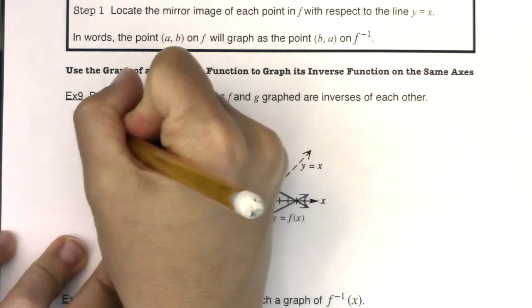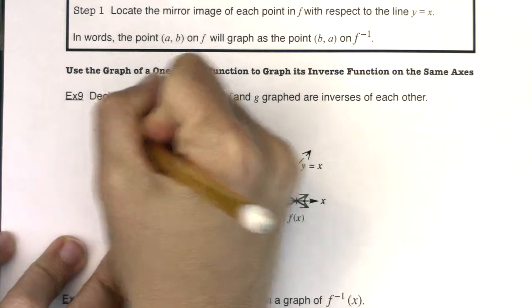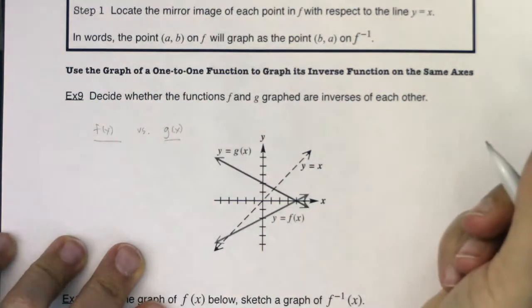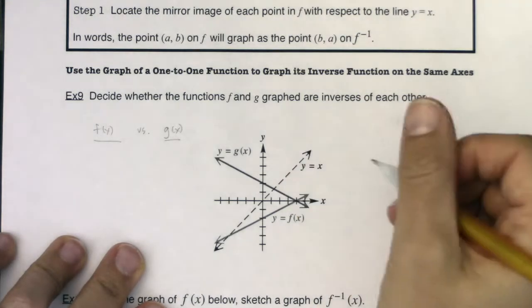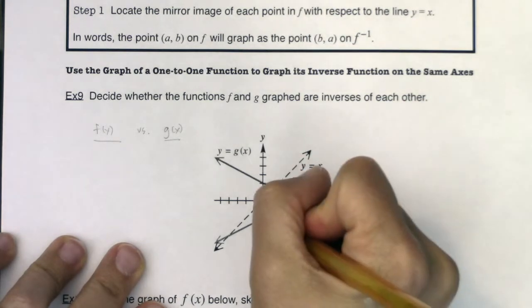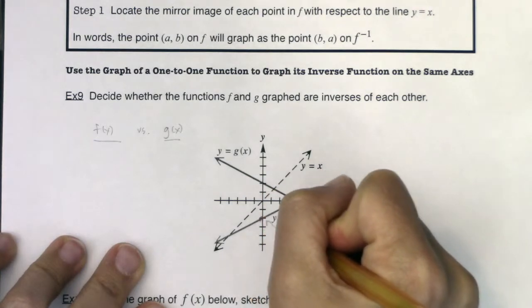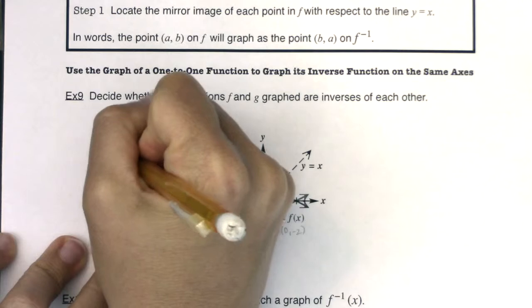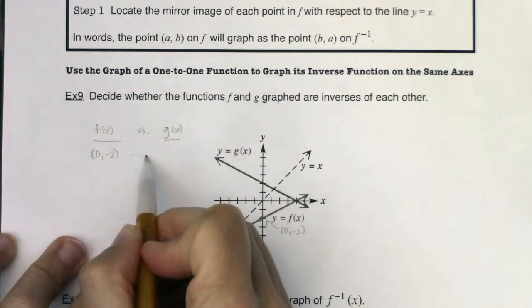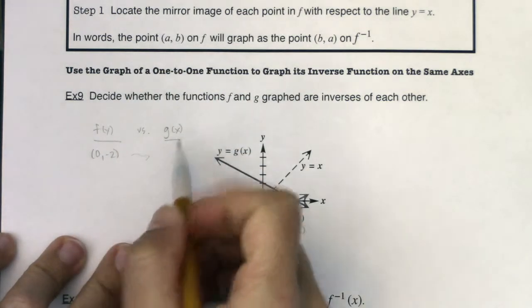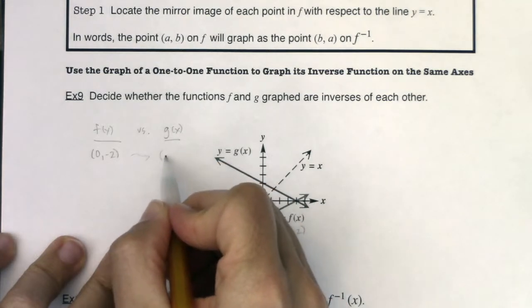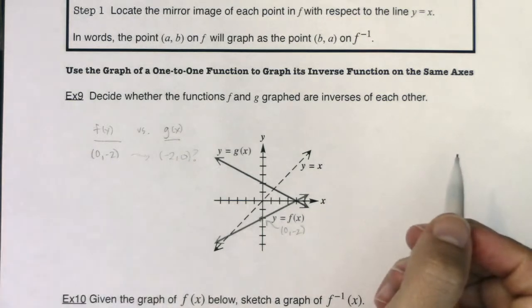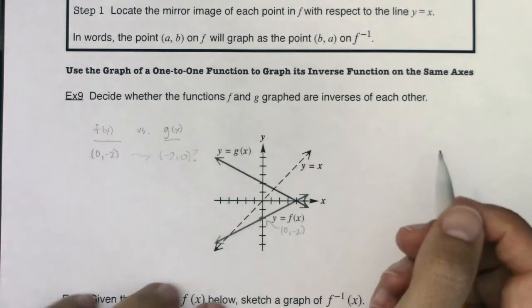Sometimes it's just good to compare ordered pairs. Let's look at f of x versus g of x numerically, okay? So find an ordered pair on either of these two functions. I'll start with f of x. I see this is a nice ordered pair. Do you see it right here at 0, negative 2, okay? Well, what would that imply about g of x if these were really inverse functions of one another? It would imply that g of x should have the ordered pair negative 2, 0. I'm going to put a little question mark right now because I don't know if it has negative 2, 0.